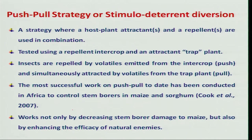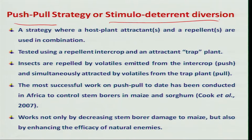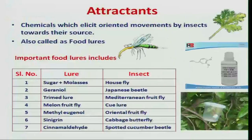Another natural method of modifying insect behavior is push-and-pull, or stimulo-deterrent diversion. We have already discussed this; the key point is that volatile chemicals produced by plants are utilized for the benefit of insect pest management. Many attractants, repellents, and deterrents are also involved in pest management programs.